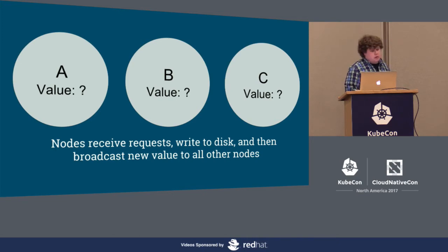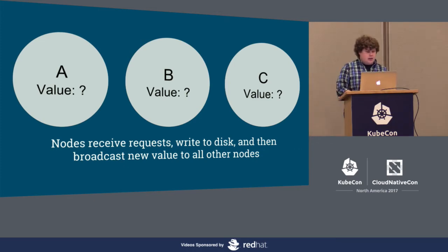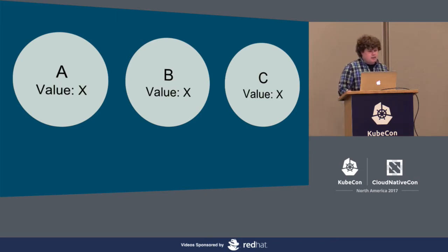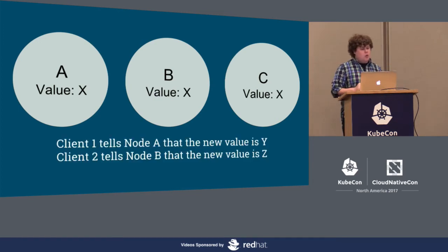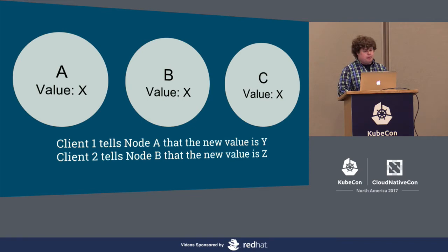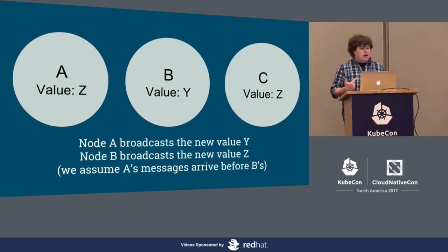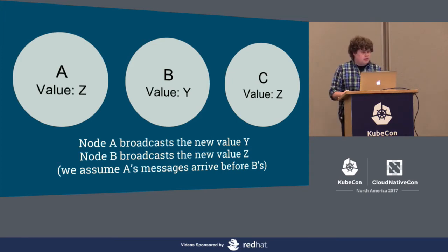In our example system, we have three nodes A, B, and C. Each holds a single value. Nodes receive requests from a client, write to disk, and broadcast the new value to all other nodes. If two clients come in simultaneously — client one tells node A the new value is Y, and client two tells node B the new value is Z — A and B each write their respective values and broadcast. Assuming A's messages arrive before B's, we end up with A and C thinking the value is Z while B thinks it's Y. We have not achieved distributed consensus.